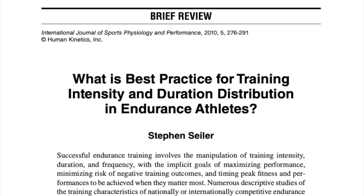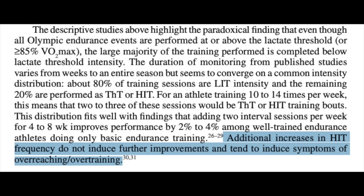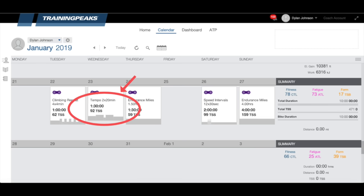The biggest thing that cyclists get wrong is the frequency of their high intensity or interval workouts. Two, or on occasion three, interval days per week is optimal. Any more than this and your interval days are going to start to suffer because you won't be fully recovered between them. A review on best practices for training intensity distribution in endurance athletes advocated for two or three high intensity or threshold sessions per week, and noted that additional increases in high intensity frequency do not induce further improvements and tend to induce symptoms of overreaching or overtraining. You want to do these high intensity sessions after a rest day so you're as fresh as possible.